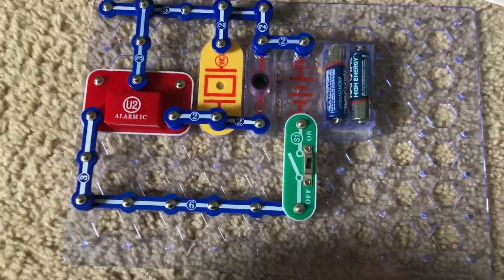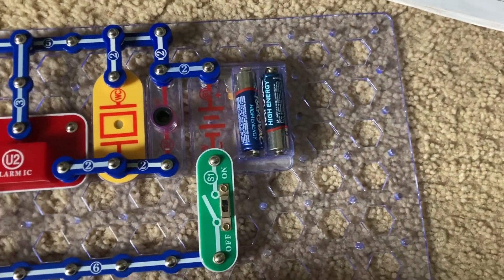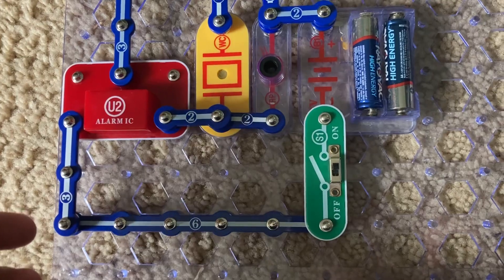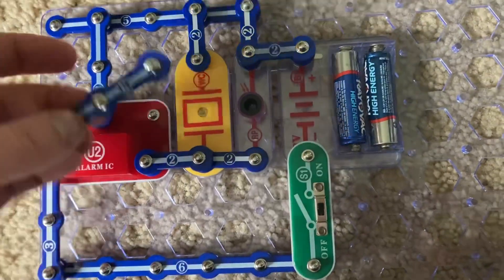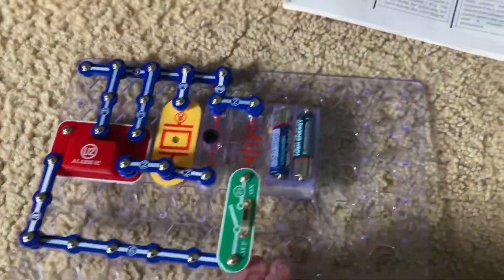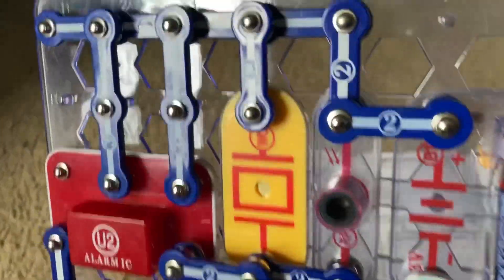Variants of this circuit include a machine gun sound, in which you place a three-snap wire between points X and Y, as you could see.